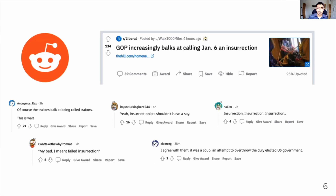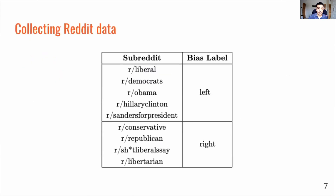For our experiments we choose Reddit as our social network of choice, and using the Reddit API we collect a series of news articles that have been linked to in Reddit posts plus the corresponding stream of Reddit comments. We focus on a binary classification task, so either predicting whether something is left-wing or right-wing, and we collect from subreddits which are explicitly left or right-wing as you can see in this table.